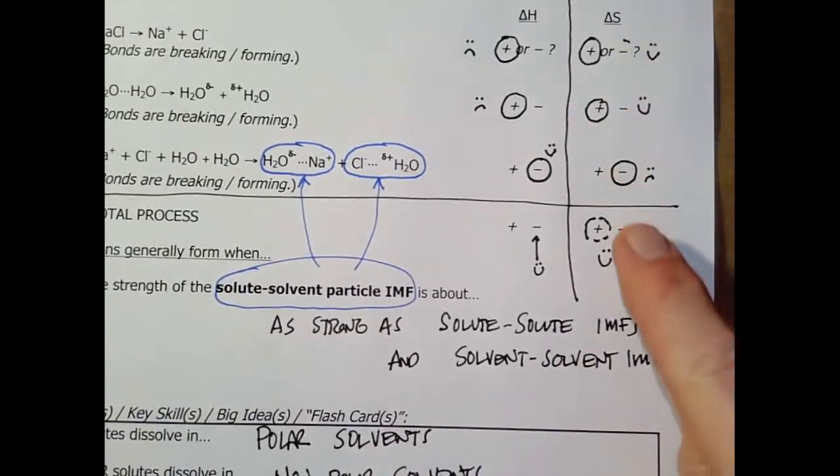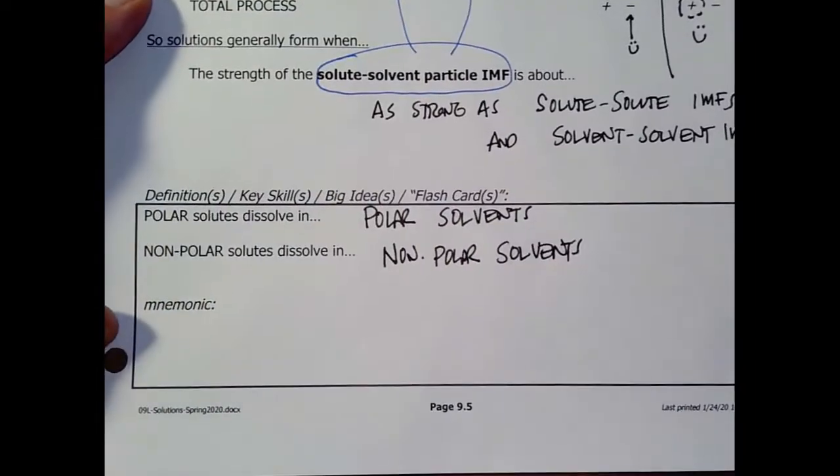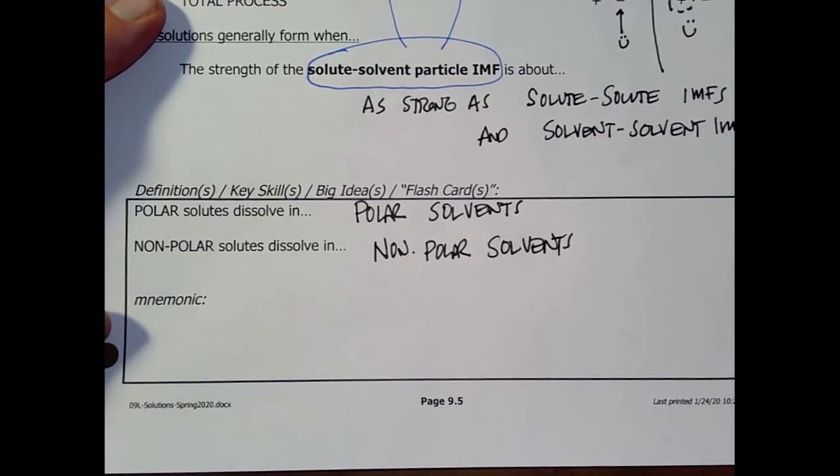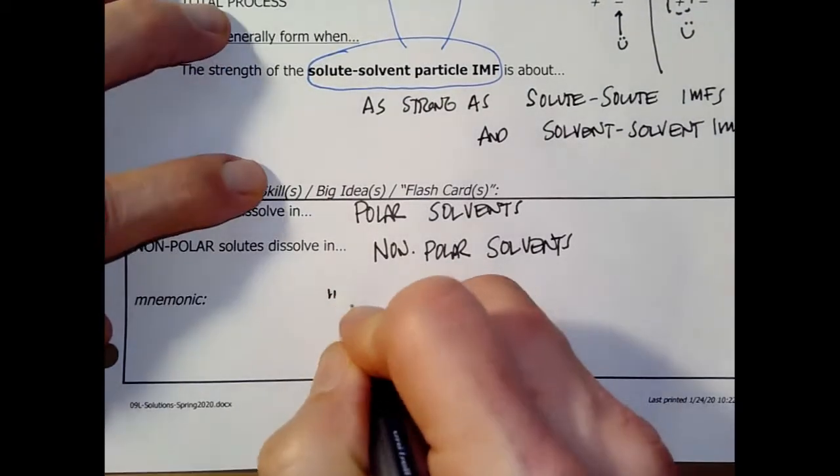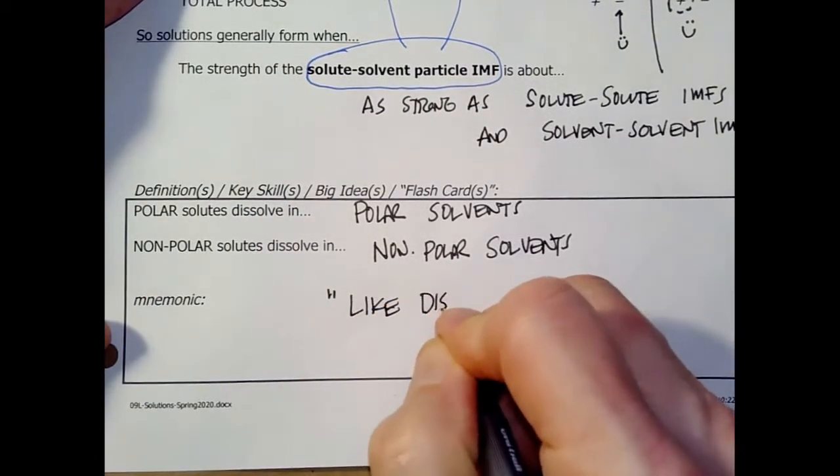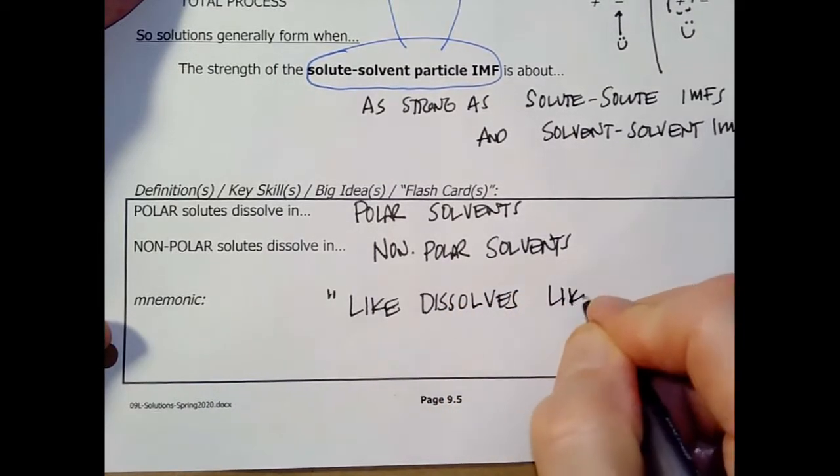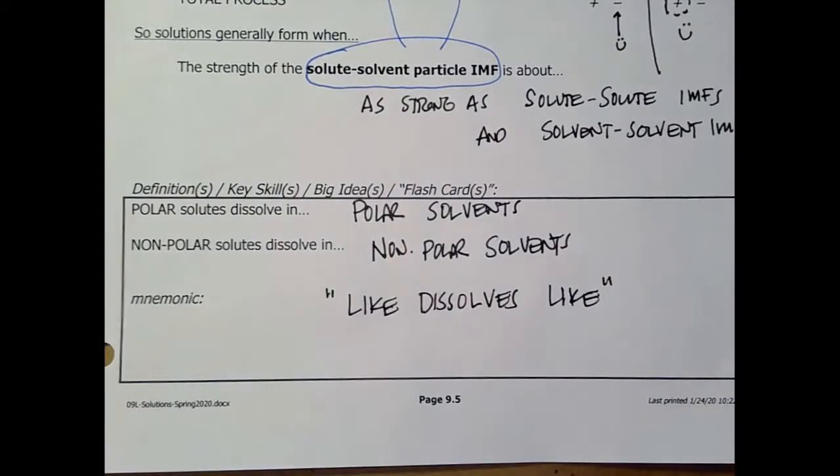Polar solutes that are stuck together by, say, dipole-dipole or hydrogen bonding or ionic bonding, they would be happy to dissolve in polar solvents, where they can get a similar kind of interaction. Non-polar solutes tend to dissolve in non-polar solvents. And again, it says the solute-solvent particle interactions are going to be strong enough that they'll sort of match the initial polar IMFs. Non-polar, non-polar, it's not very strong. So it can only happen if the initial things that were sticking together were held together by, say, London dispersion forces.